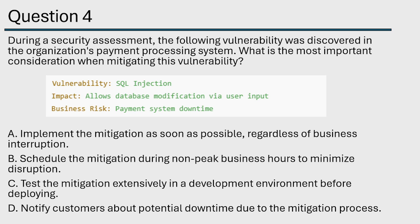Let's start with A: Implement the mitigation as soon as possible, regardless of business interruption. I like implementing the mitigation as soon as possible, but I'm not sure about 'regardless of business interruption' — I have a problem with that part. B: Schedule the mitigation during non-peak business hours to minimize disruption. I like that answer better than A. Remember, cybersecurity is a cost to most companies, so if the payment system isn't down, does it really make sense to do it that way? C: Test the mitigation extensively in a development environment before deploying. D: Notify customers about potential downtime due to the mitigation process. We'll send them an email, but definitely not the most important thing we're going to do.